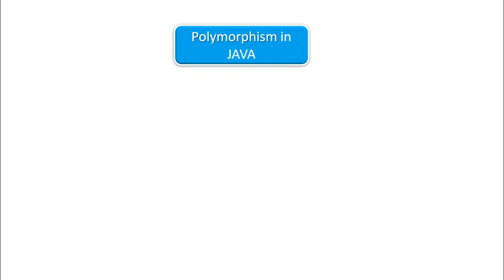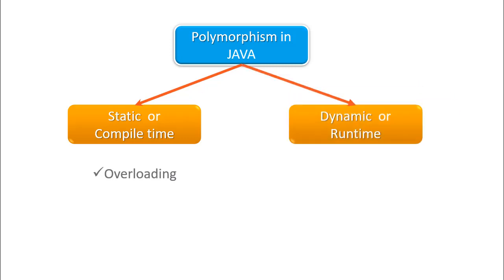Let us summarize. The polymorphism in Java can be classified under two main categories. Static polymorphism, also known as compile-time polymorphism, this is achieved by way of overloading. And the dynamic polymorphism, also known as runtime polymorphism, is achieved through overriding methods.